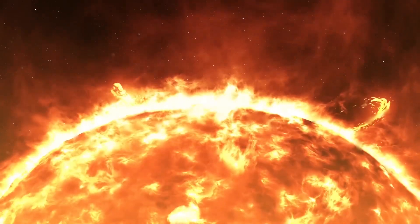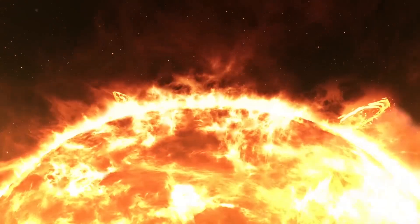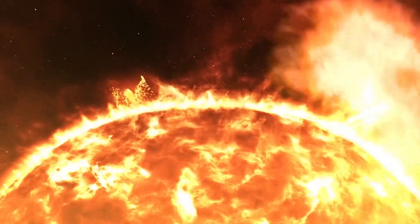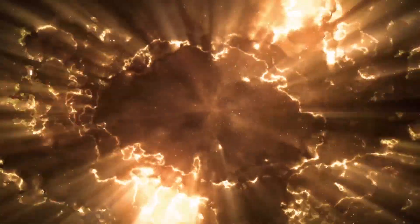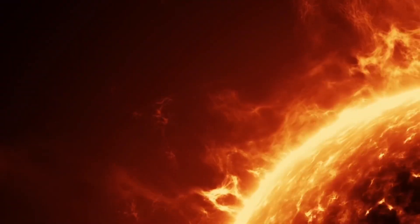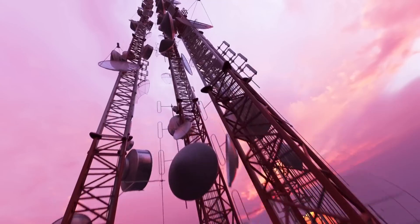For astronauts, these solar storms can be life-threatening, as radiation exposure in space is much higher than on Earth. That's why space agencies closely monitor solar activity to protect astronauts and space missions. On Earth, power grids are another area of concern.